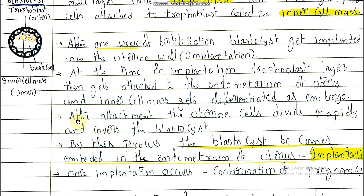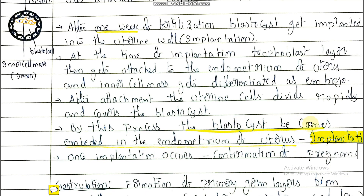Once implantation takes place — after attachment to the uterine wall — the uterine cells divide rapidly and cover the blastocyst. The blastocyst becomes tightly embedded in the endometrium wall of the uterus.